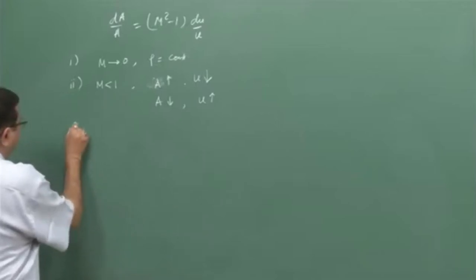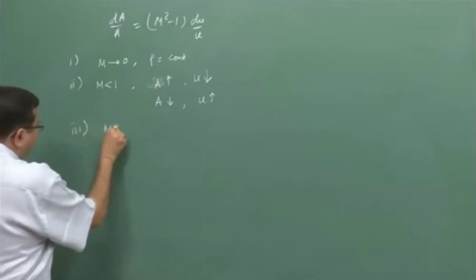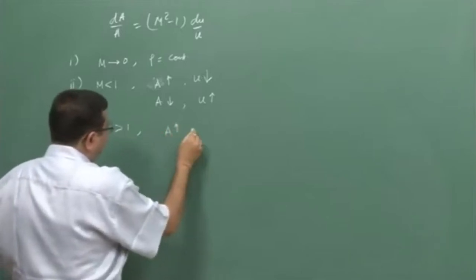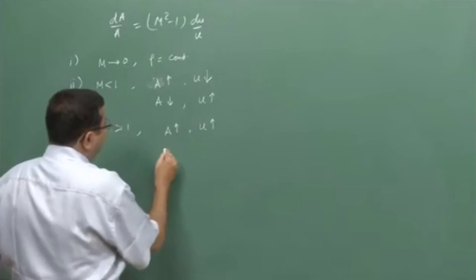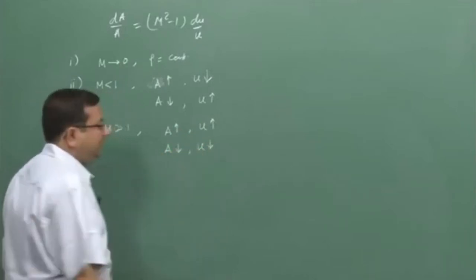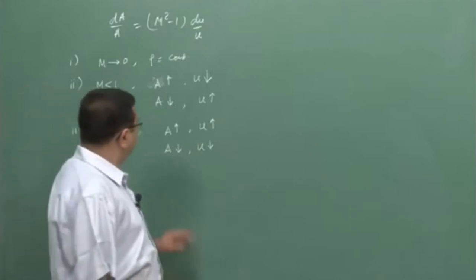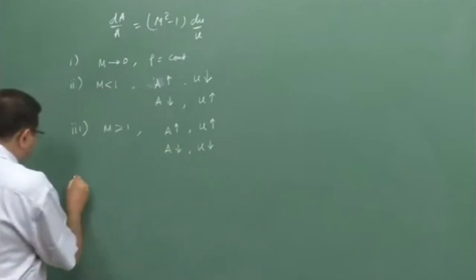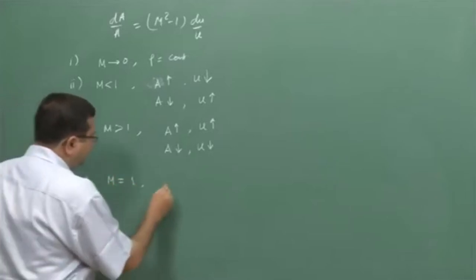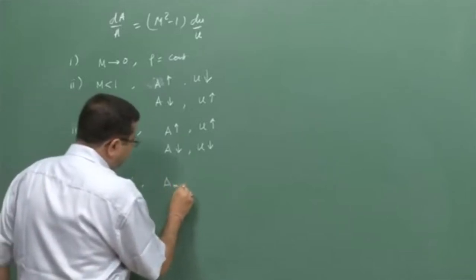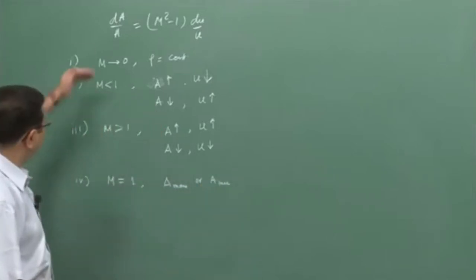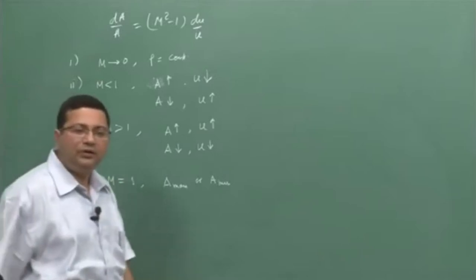Then we have shown that it is the other way around for a supersonic flow. For a supersonic flow, as area increases, velocity increases, and as area decreases, velocity decreases. We have also shown that in the limiting case when Mach number is equal to 1, the area is either a maximum or a minimum. This we derived from the area-velocity relationship.